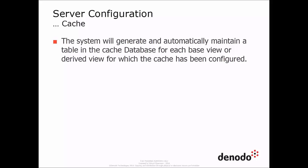Therefore, after enabling the cache for the entire server, the cache for each view needs to be individually activated. For every view with the cache activated, the Virtual Data Port server will create and maintain a table in the cache database system.